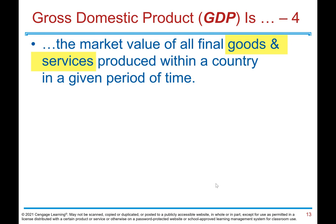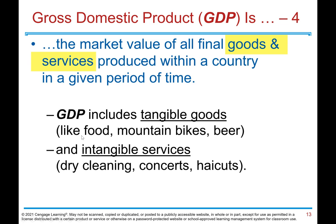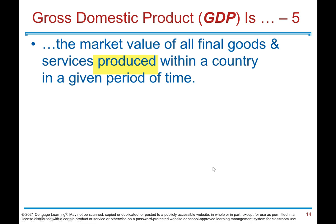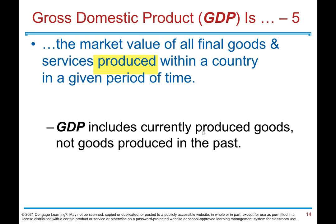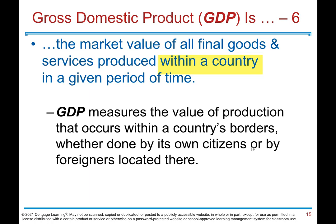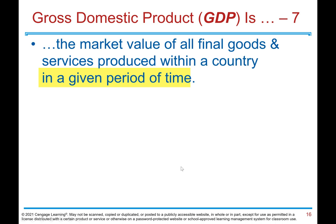'Goods and services' includes tangible goods like food, mountain bikes, and beer, and intangible services like dry cleaning and haircuts. 'Produced' means GDP includes currently produced goods, not goods produced in the past. 'Within a country' means GDP measures the value of production that occurs within a country's borders, whether done by its own citizens or by foreigners located there. 'In a given period of time' usually means a year or a quarter — three months.